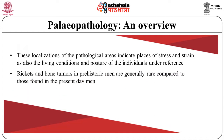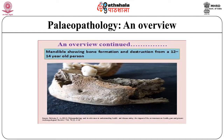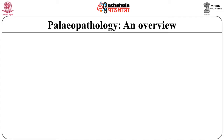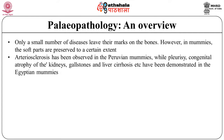Rickets and bone tumours in prehistoric men are generally rare compared to those found in present-day men. Dental pathology was first reported among the Neanderthals — pyorrhea — and then among the Neolithic, especially in Scandinavia. This figure shows rickets in the lower limb long bone of a skeleton of a 3-4 year old, given by Roberts in 2016 from the Coach Lane, North Shields, England. Only a small number of diseases leave their mark on bones; however, in mummies the soft parts are preserved to a certain extent. Arteriosclerosis has been observed in Peruvian mummies, while pleurisy, congenital atrophy of the kidneys, gallstones and liver cirrhosis have been demonstrated in Egyptian mummies.